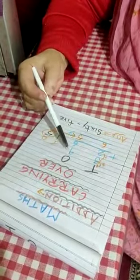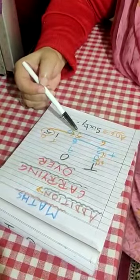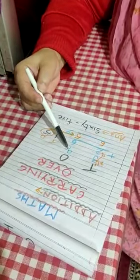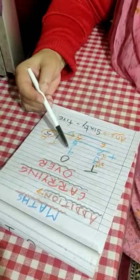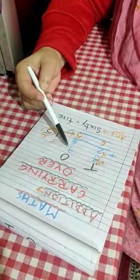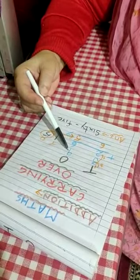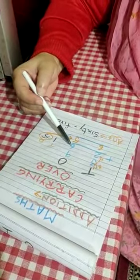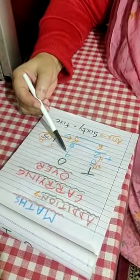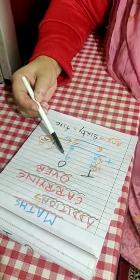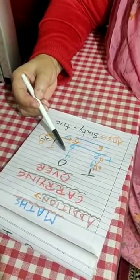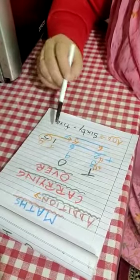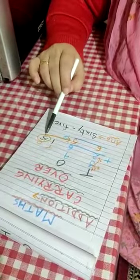Starting with the numbers in the ones place, which is the greater number of the two — 9 or 6? 9. So you put 9 in your mind and take out 6 fingers. Count after 9: 10, 11, 12, 13, 14, 15. So you got 15 here.